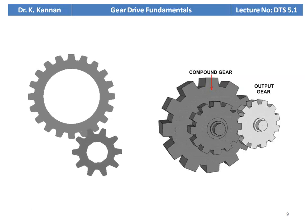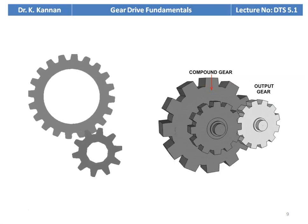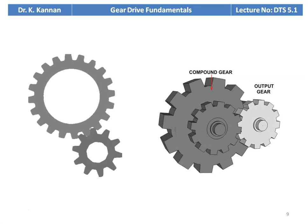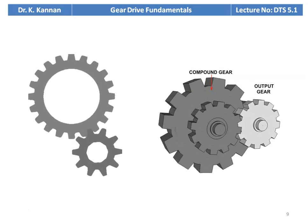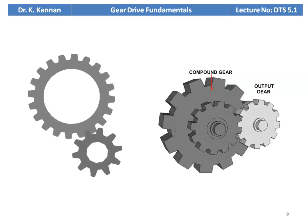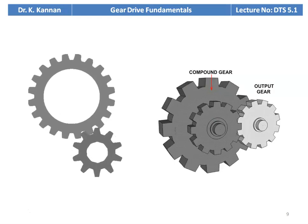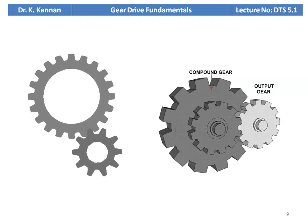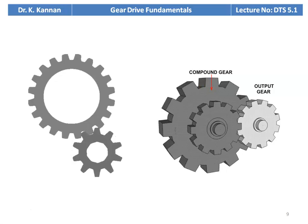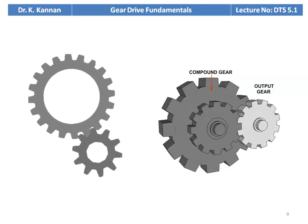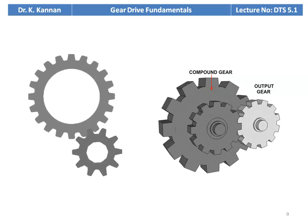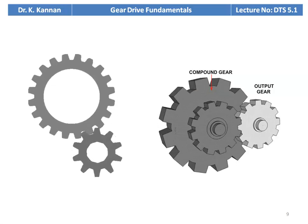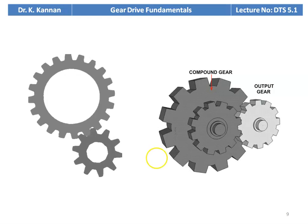This is a compound gear. When we want a specific speed ratio — particularly to reduce speed from a larger value — we may use compound gear. Depending on the speed ratio required, we use either a simple spur gear drive or a compound spur gear drive.